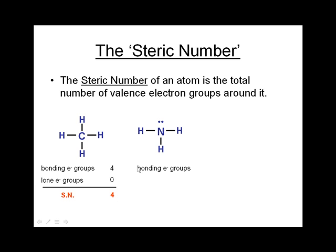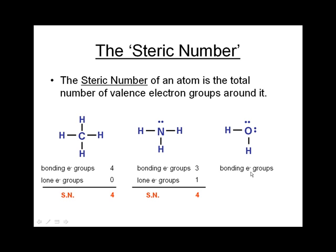For ammonia, NH3: there are three bonding electron groups and one non-bonding group, adding up to a steric number of four. For the H2O molecule, looking at the central oxygen atom: there are two bonding electron groups and two non-bonding electron groups, again giving a steric number of four. So even though these three molecules have some very major differences between them, they share the same total number of electron groups around the central atom.